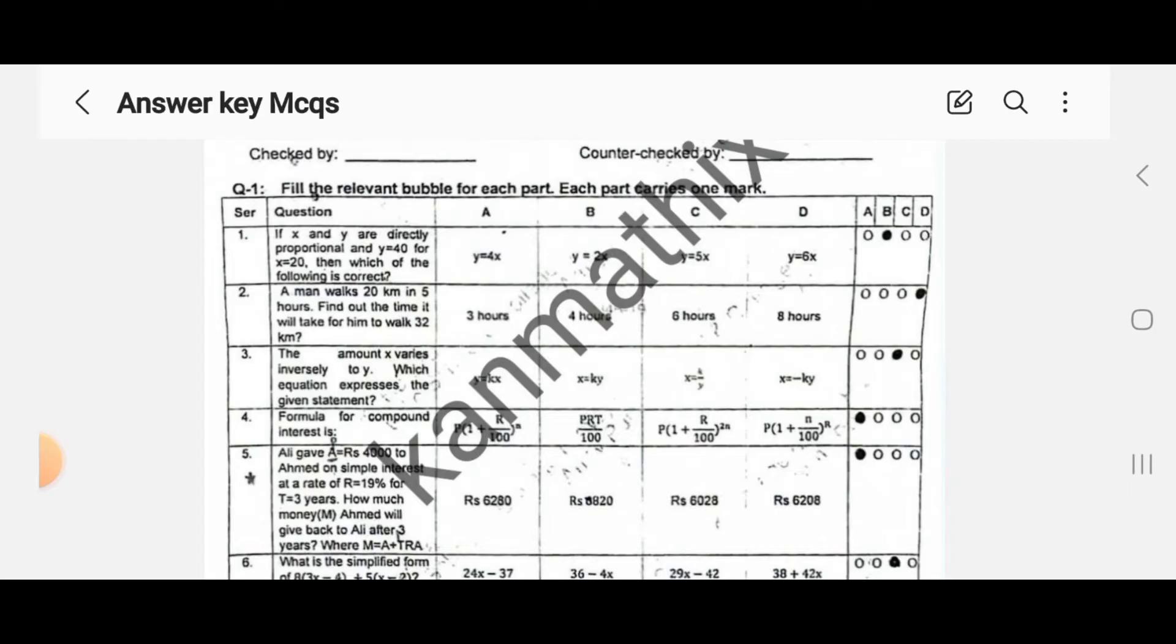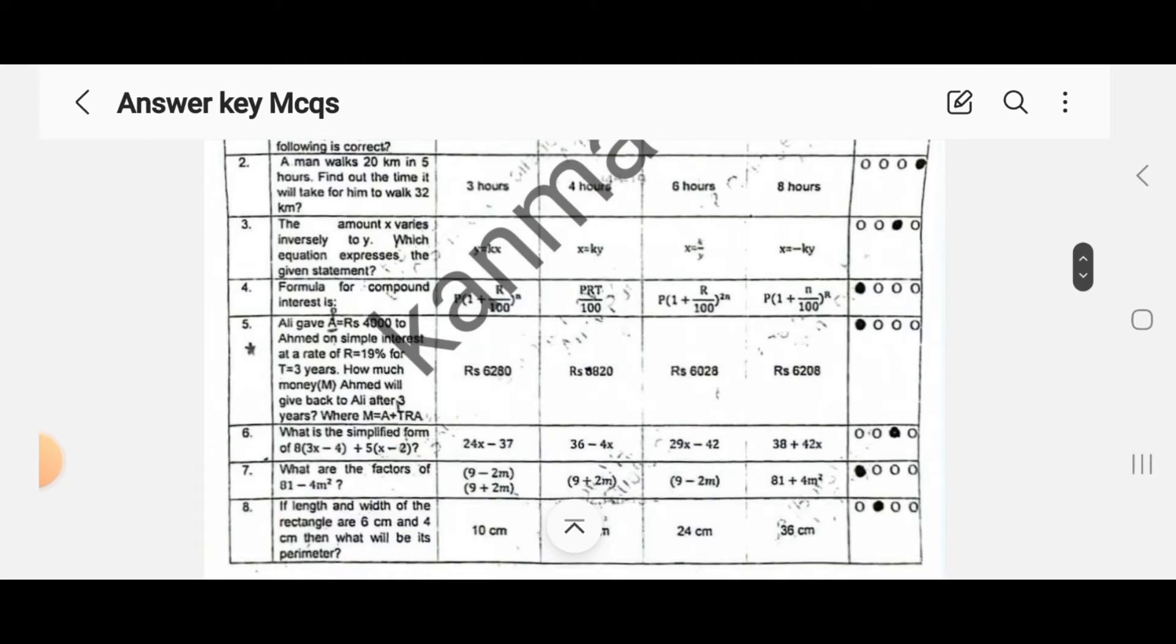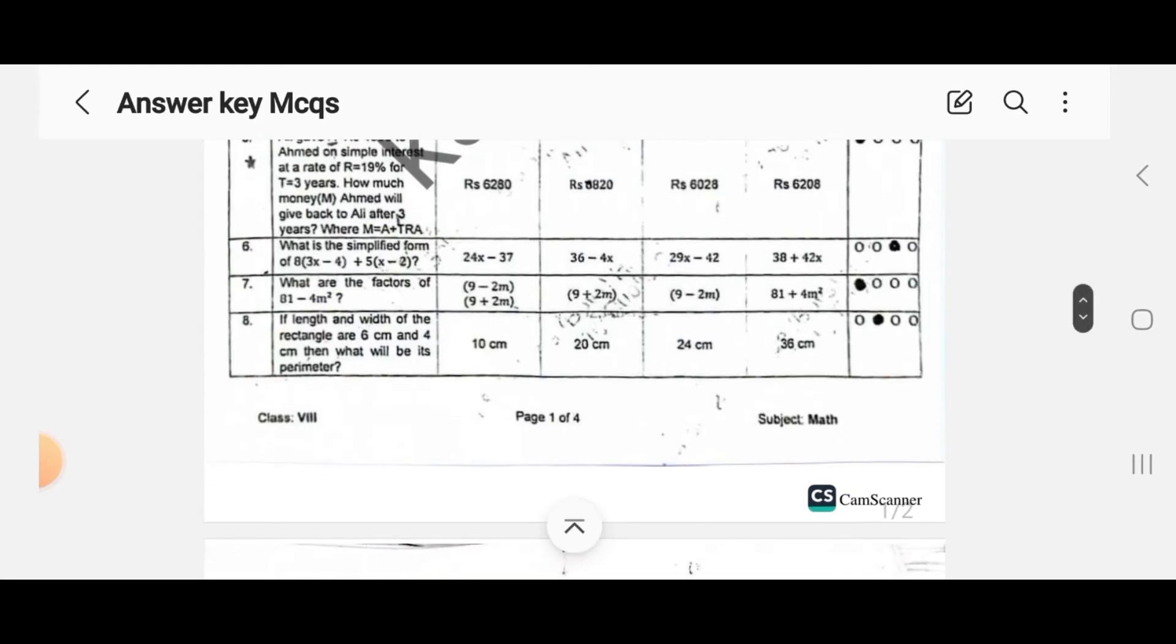B. MCQ number two, correct option is D. MCQ three, correct option is C. MCQ four, correct option is A. MCQ five, correct option is again A. MCQ six, correct option is C. MCQ seven, correct option A. MCQ eight,